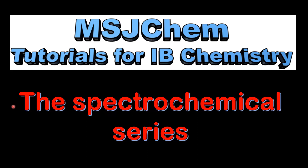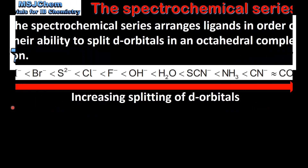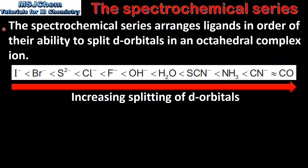This is MSJChem. In this video I'll be looking at the spectrochemical series. The spectrochemical series arranges ligands in order of their ability to split d orbitals in an octahedral complex ion.